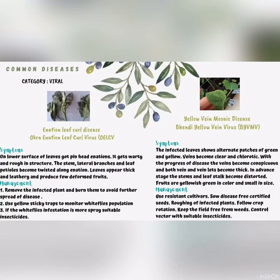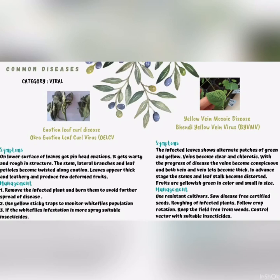For common diseases under viral, the first disease is Okra Leaf Curl Disease, also known as Okra Leaf Curl Virus. The symptoms are pinhead lesions on the lower surface of the leaf, which become watery and rough in structure. The management includes removing infected plants and burning them to avoid further spread of disease, and using yellow sticky traps to monitor the whitefly population; if whitefly infestation is high, spray suitable insecticides.